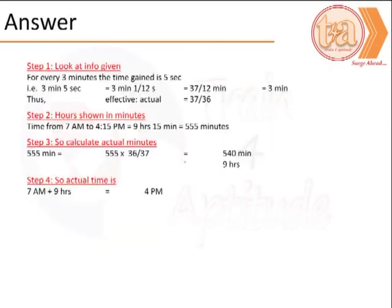We proceed to solve for the answer. Looking at the information given, 3 minutes is essentially equal to 37 by 12 minutes given that it has 5 seconds extra. So the ratio of effective to actual would be 37 is to 36.